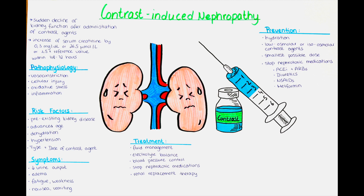Contrast agents can also have direct toxic effects on renal tubular cells. These agents may induce cellular injury, oxidative stress and inflammation within the renal tubules. The damaged tubular cells can impair the reabsorption and excretion of water, electrolytes and waste products, disrupting normal kidney function.